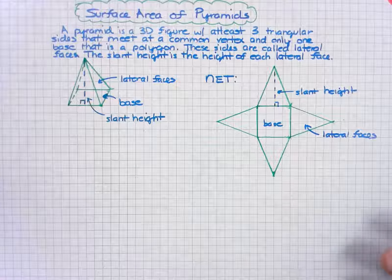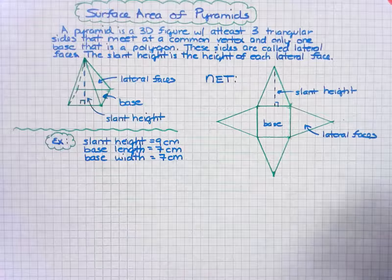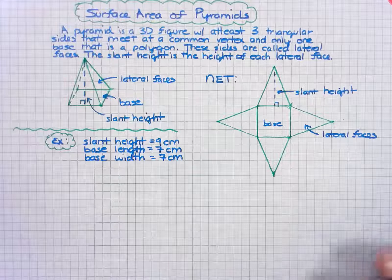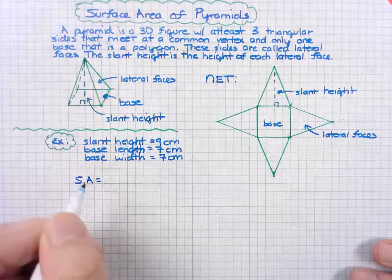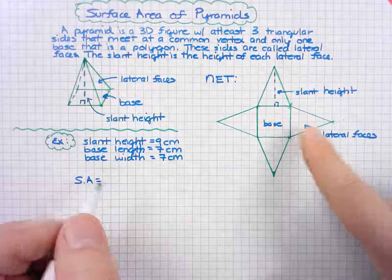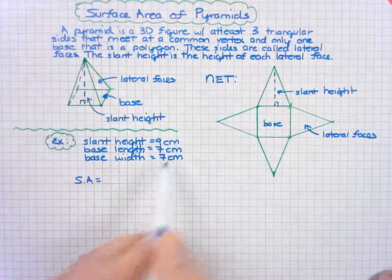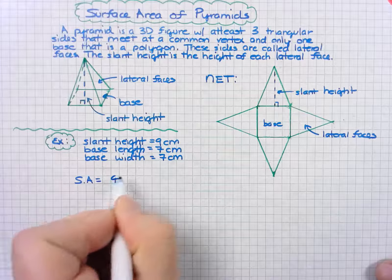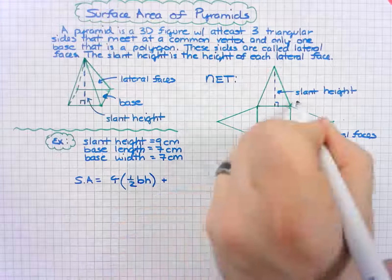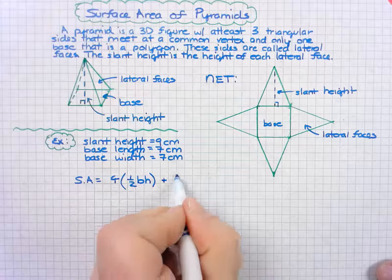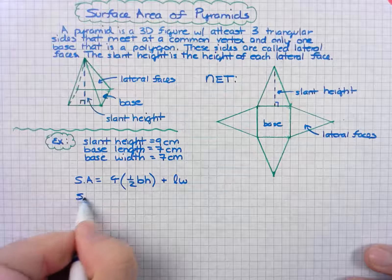Let's look at an example and derive the formula for the surface area. Surface area equals four triangles, and they all have the same base length because the base is a square. So I have four areas of a triangle, plus the area of the base, which is length times width, or in this case, side squared. Now I can plug in the values I know.